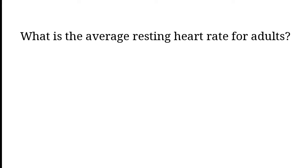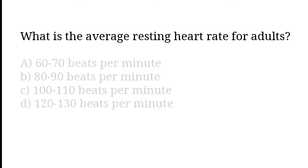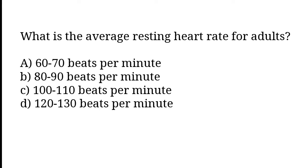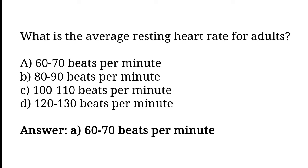What is the average resting heart rate for adults? 60-70 beats per minute, 80-90 beats per minute, 100-110 beats per minute, 120-130 beats per minute. So the correct answer is option A. 60-70 beats per minute.